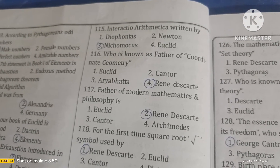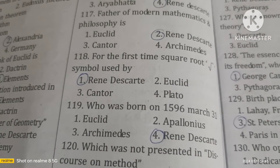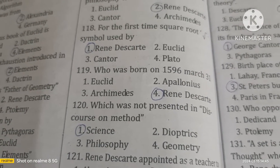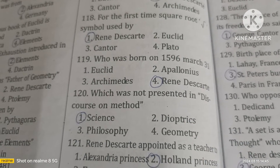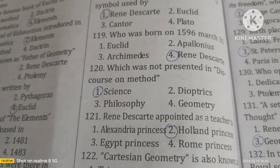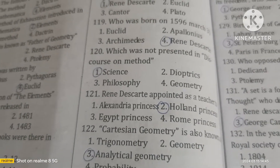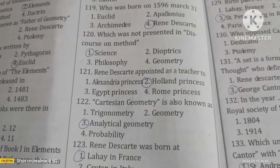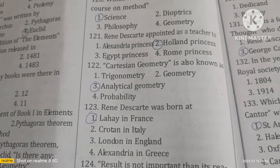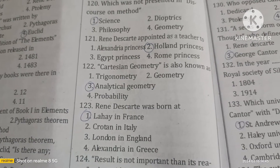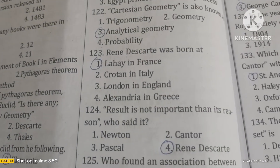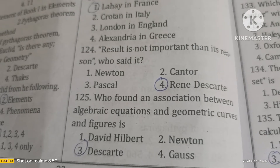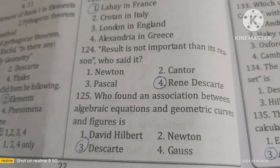The books of Euclid include Data, Elements, Optics, and Phenomena. Introductio Arithmetica was written by Nicomachus. René Descartes is known as the father of coordinate geometry. He was the first to use the square root symbol and was born on March 31, 1596. Cartesian geometry is also known as analytical geometry. Descartes was born at La Haye in France. 'The result is not as important as its reason' — said by René Descartes. Descartes found an association between algebraic equations and geometric curves.